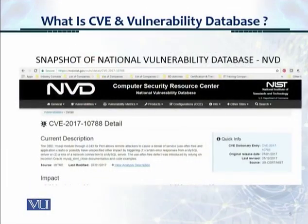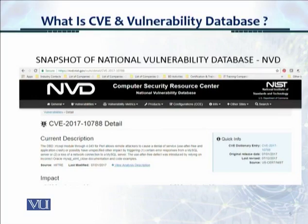Here is a snapshot of the National Vulnerability Database, or the NVD database. The URL is nvd.nist.gov. On the screen, we're able to see one particular vulnerability, which is CVE-2017-10788, related to MySQL. This is the format of the vulnerability — it gives a description, it gives an impact.